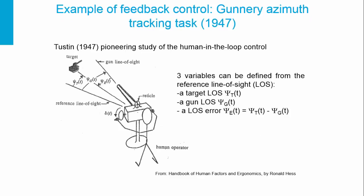One of the first examples of feedback controls was applied to the gunnery azimuth tracking task in 1947. In this picture, you have a gun and a human trying to reach the target. There are three variables defined with respect to a reference line of sight: the target line of sight angle CT, the gun line of sight angle CG, and the error which is the difference between the two.